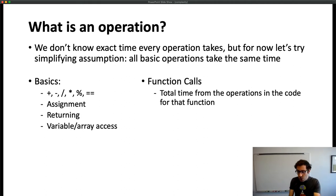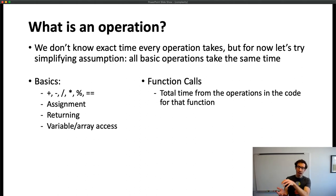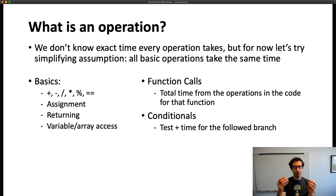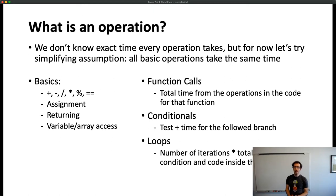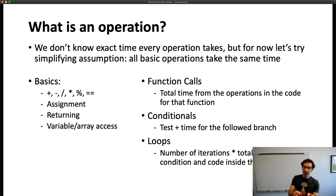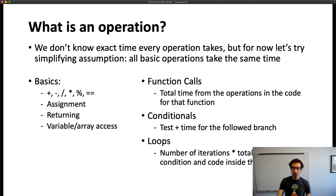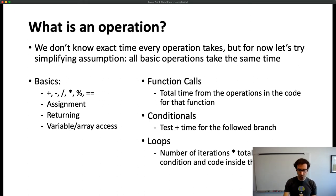Other things our code might do: when a function call is made, we count up the operations in the code for that function. For a conditional like 'if x == 0', we count that equals check as one operation, plus whatever code is inside the if. For loops, we count how many iterations the loop runs, then multiply by the total time for the code inside the loop plus the condition check. So if we do ten iterations and our loop takes ten operations per iteration, that's a hundred operations total.